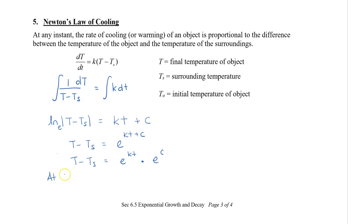At time equal to 0, I will get T minus Ts equal to e to the 0 times e to the c. So e to the 0 is 1. Therefore, e to the c is equal to T. I'm going to change this T of 0 to T naught minus Ts.